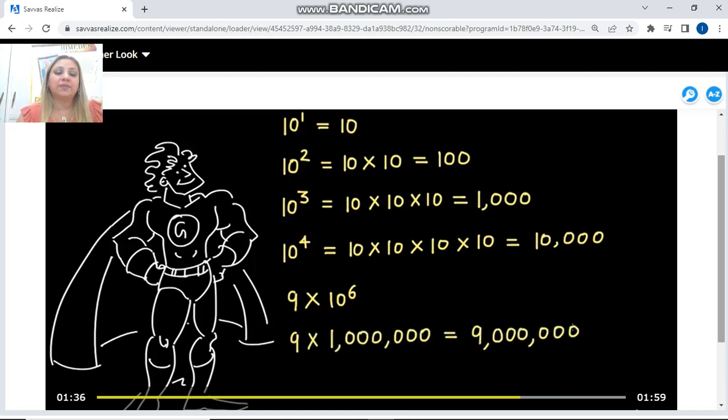What if I have 9 times 10 to the sixth power? That means I am multiplying 9 by 1,000,000, which is a 1 followed by 6 zeros, and that is equal to 9,000,000.